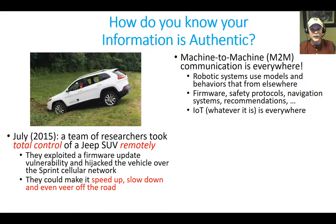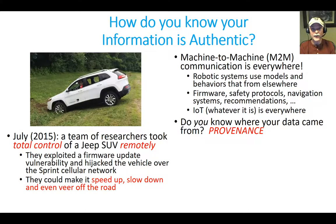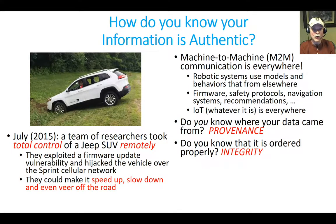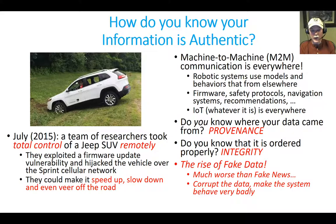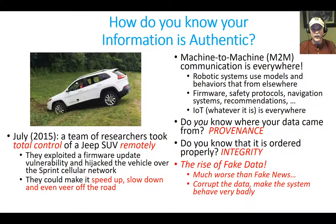The Internet of Things, which has a wide variety of definitions, pretty much takes sensor items, processes them, and automatically acts on them in cyber-physical systems. This is pretty worrisome because in all of this you might ask: do you know where the data came from? That's a provenance question. And do you know that it's still ordered correctly, or that none of the bits have been changed? That's an integrity problem. And really these are all offshoots of what I like to call the rise of fake data — which is kind of exactly like fake news but worse, because it's basically data that gets automatically acted on. You corrupt some data in one place and suddenly a car goes off the road or a remote factory starts making something it wasn't supposed to.